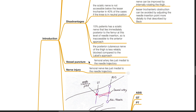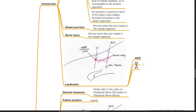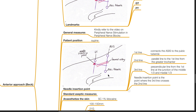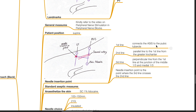Vessel puncture: the femoral artery lies just medial to the needle trajectory. Risk of nerve injury: the femoral nerve also lies just medial to the needle trajectory. Important landmarks: the ASIS, greater trochanter, and pubic tubercle. Technique: patient position is supine. Needle insertion point: draw a first line connecting the ASIS to the pubic tubercle. Draw a second parallel line from the greater trochanter. Draw a third perpendicular line from the first line at the junction of the middle third and medial third. The needle insertion point is where the third line crosses the second line.